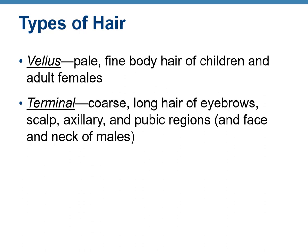Types of hair: vellus hair is pale, fine body hair found on children and adult females. Terminal hair is coarse and long — found on eyebrows, the scalp, axillary and pubic regions, and the facial hair of males.